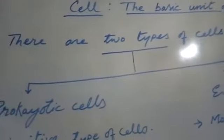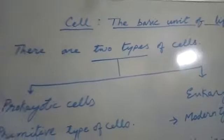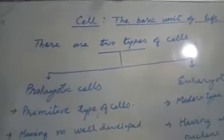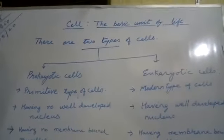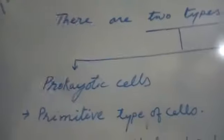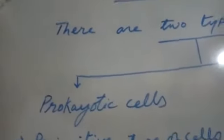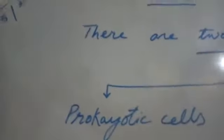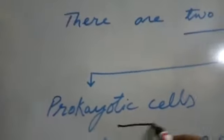Today we will know that there are two types of cells: prokaryotic and eukaryotic. The first is prokaryotic and the second is eukaryotic cells.